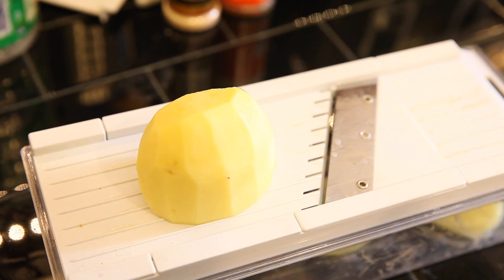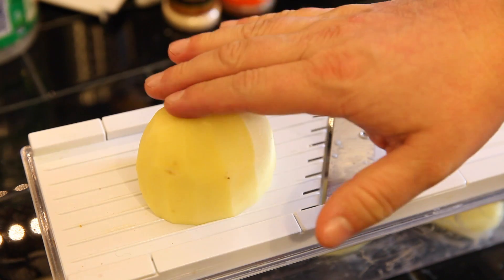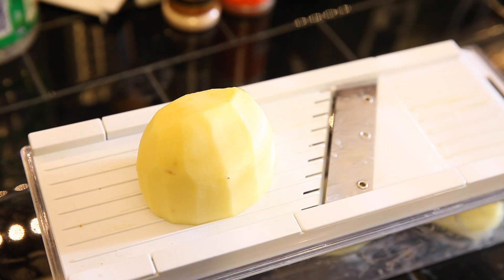So to start making the potato chips we're going to take a peeled potato. I'm using Yukon Gold. You can use russets. I think Yukon Gold gives you a little nicer yellow color for the potato chips.